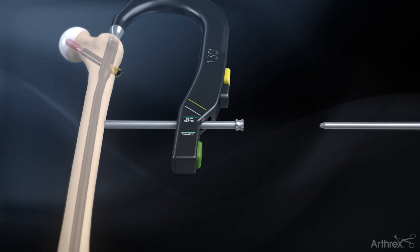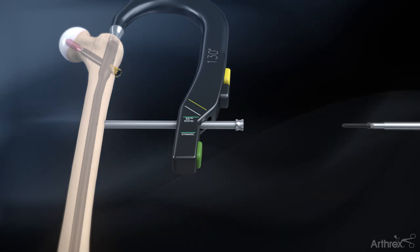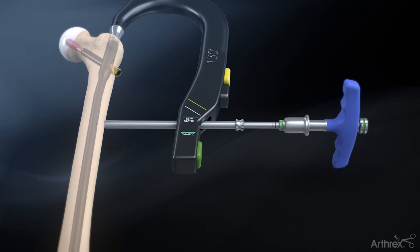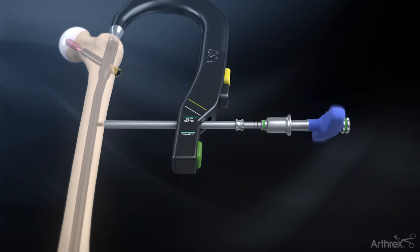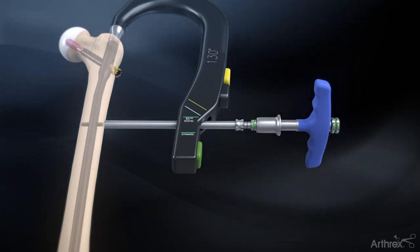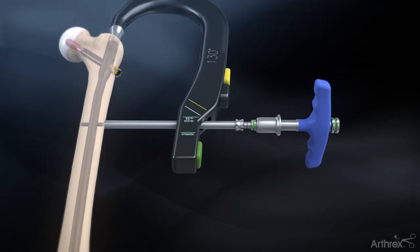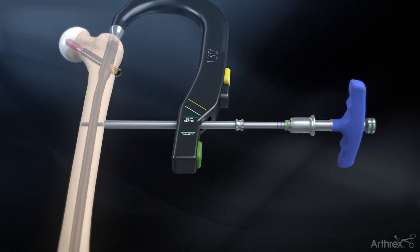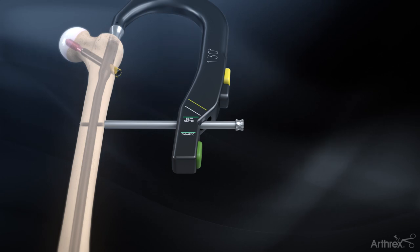Remove the distal drill guide and insert the 5.0 mm captured screw with the 5.0 mm hex driver. When the first laser mark reaches the sheath, the bottom of the screw head has reached the other end of the sheath. Unscrew the capturing rod in the hex driver and remove the driver assembly.